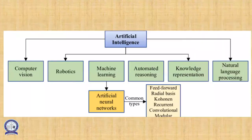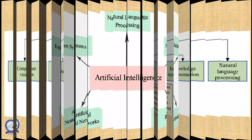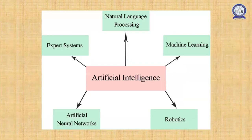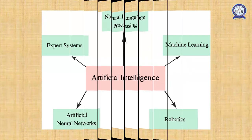These are the computerized terminology used in artificial intelligence: computer vision, robotics, machine learning — whose important component is the artificial neural network — automated reasoning, knowledge representation, and natural language processing. Artificial intelligence also includes expert systems, natural language processing, machine learning, and robotics.